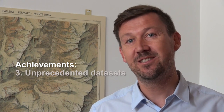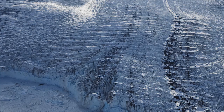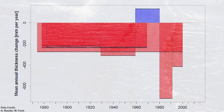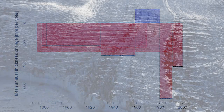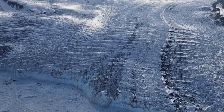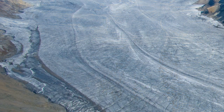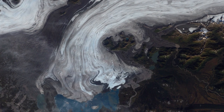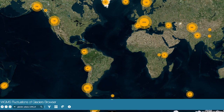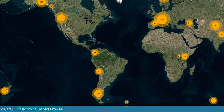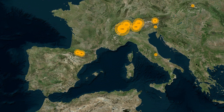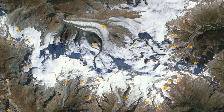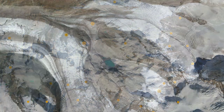We have managed to compile an unprecedented dataset on glacier changes and distribution. The World Glacier Monitoring Service collects standardized observations on changes in mass, volume, area and length of glaciers with time — so-called glacier fluctuations — as well as statistical information on the distribution of glaciers around the globe. Such glacier fluctuation and inventory data are high-priority key variables in climate system monitoring. They form a basis for impact assessments and hydrological modeling with respect to atmospheric warming, and provide fundamental information in glaciology, glacial geomorphology and quaternary geology.